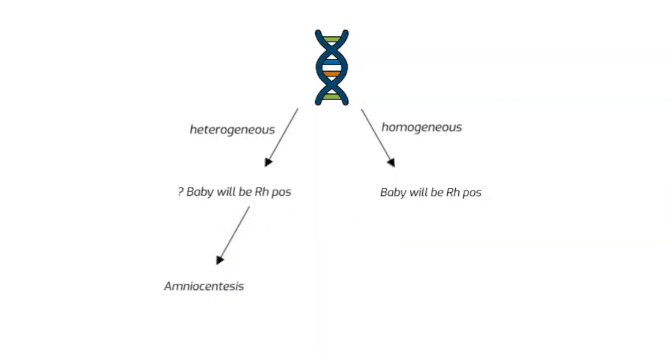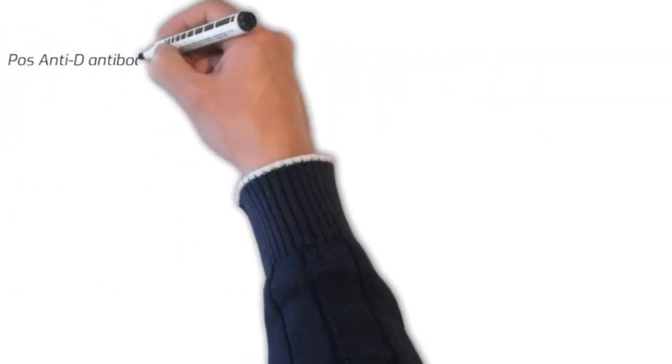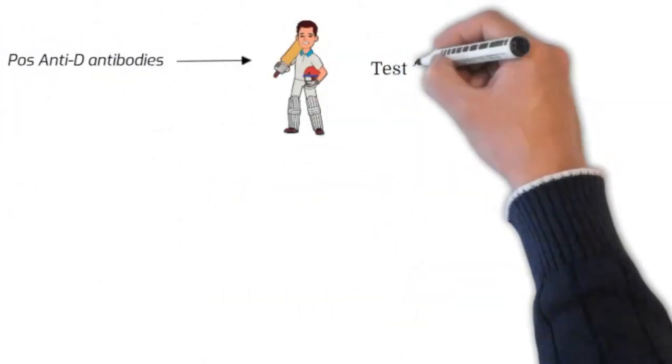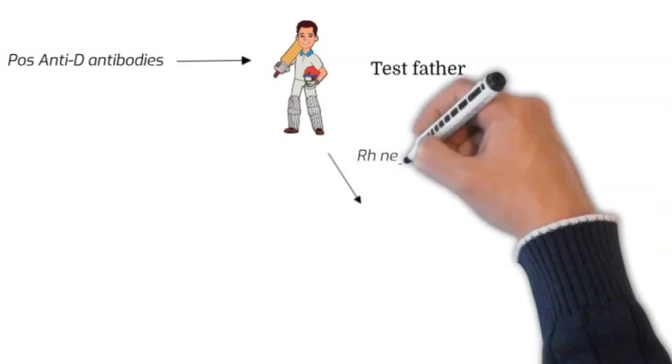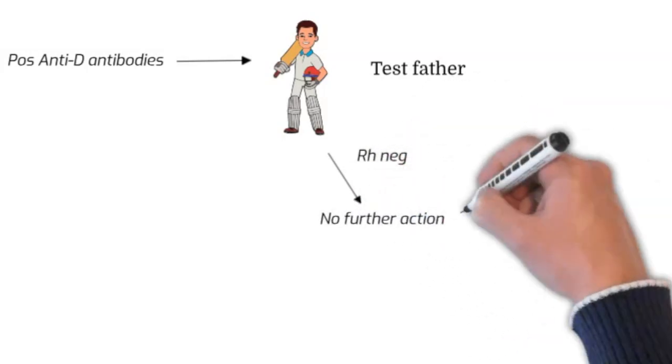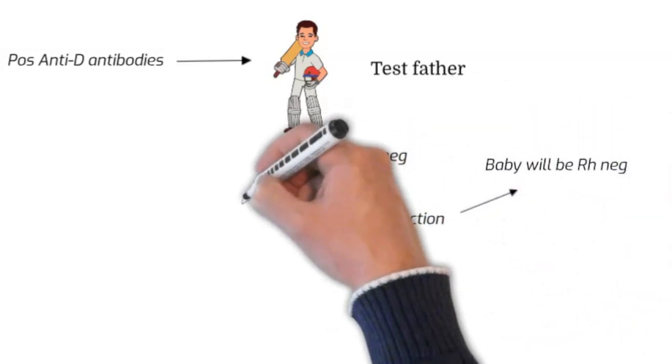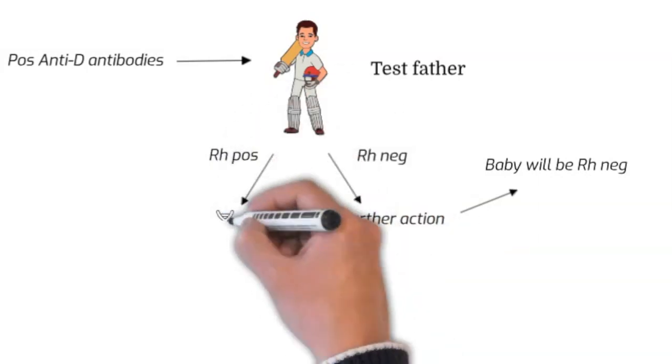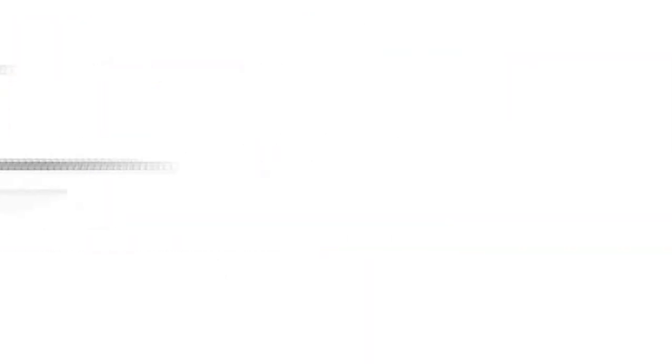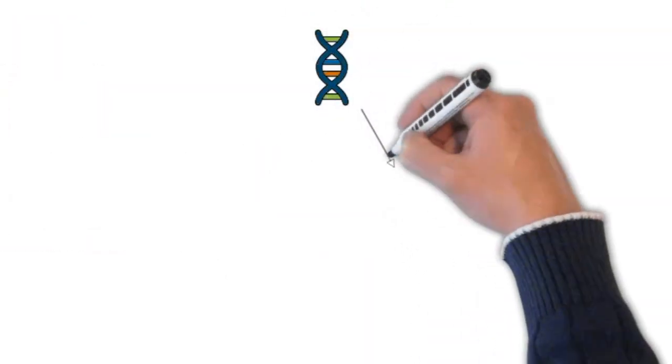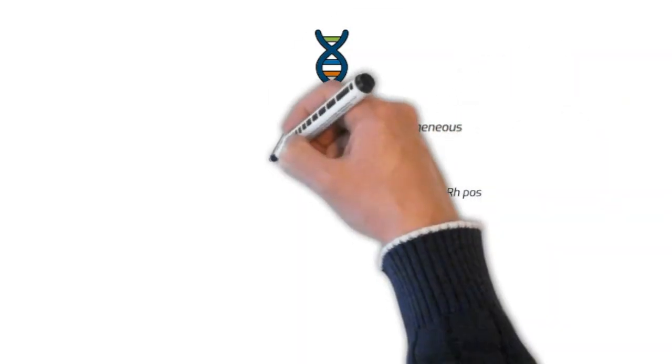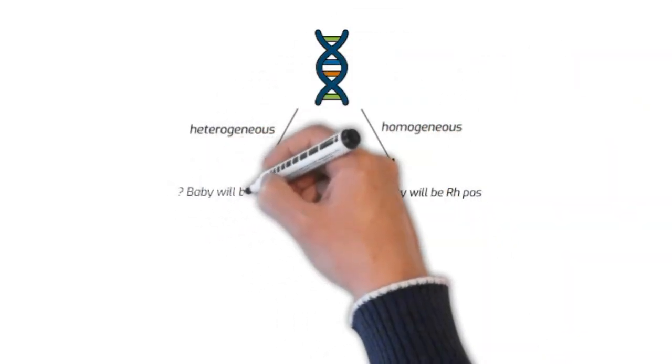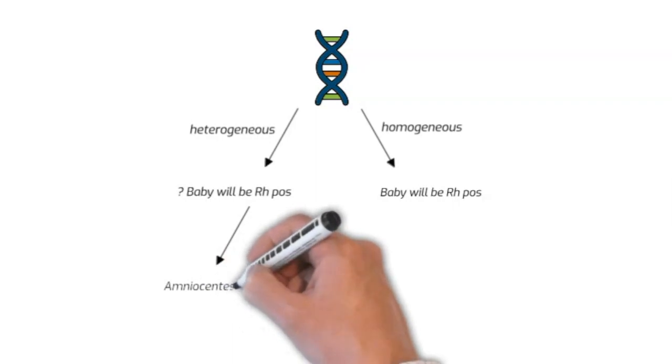This can be confusing, so let me repeat it again. If the mother is found to have anti-D antibodies, then the next step would be testing the father. If the father is RH negative, then no action is required because the baby will be RH negative. If the father is RH positive, however, we have to test whether the father is homozygous or heterozygous for the antigen. If the father is homozygous, then the baby will be RH positive. If the father is heterozygous, then perform amniocentesis to check the status of the baby.